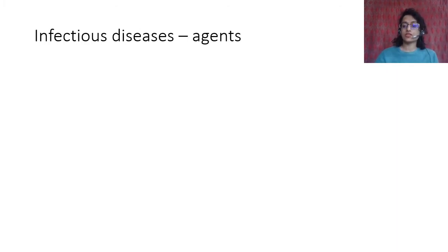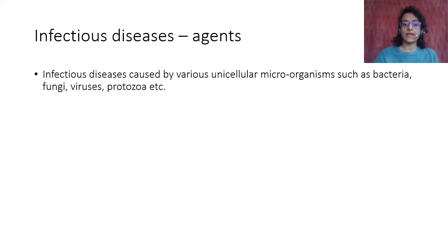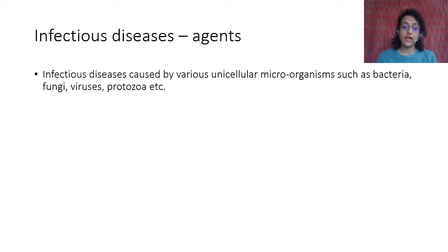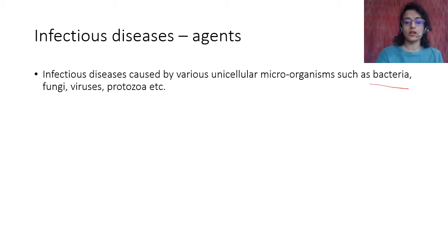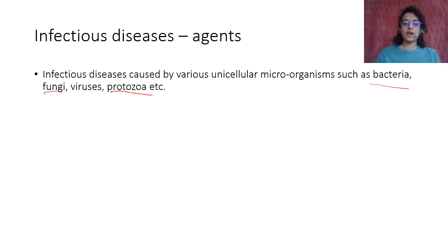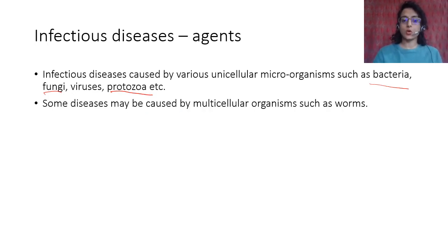In this part, the first thing we are going to learn about is the agents of infectious diseases. Infectious diseases are caused by various unicellular microorganisms such as bacteria, fungi, viruses, and protozoa. We have talked about unicellular organisms earlier — bacteria, fungi and protozoa — though viruses are a bit more complicated. Infections may also be caused by multicellular organisms such as worms.